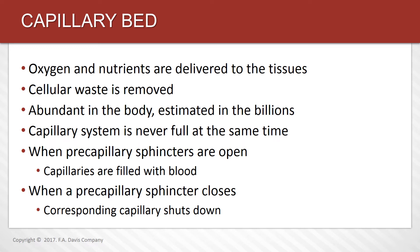The capillary beds are where the real work of the vascular system is done. There is an abundance of them — billions — which makes them close to virtually every cell in the body. Oxygen and nutrients are delivered to the tissue through them, and cellular waste is also removed. There are so many of them that every cell gets a close connection.